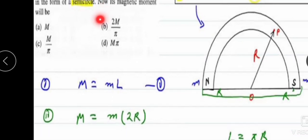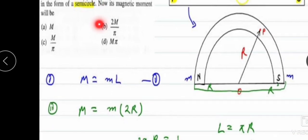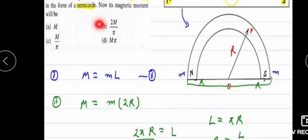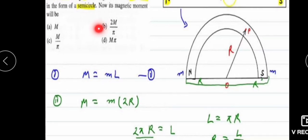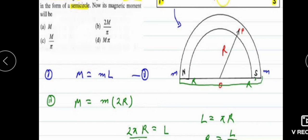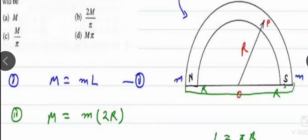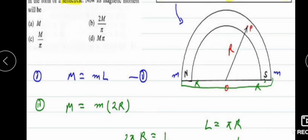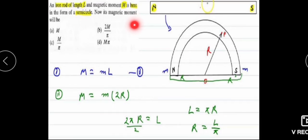Next question: An iron rod of length L and magnetic moment M is bent to form a semicircle. What will its new magnetic moment be? The options are: (A) M, (B) 2M/π, (C) M/π, and (D) Mπ.